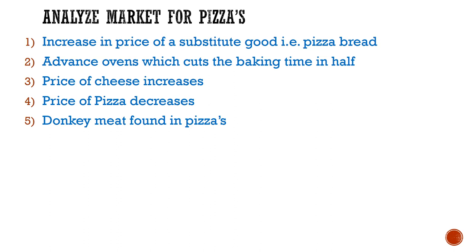Second, there is an advancement in technology — there are advanced ovens which cut the baking time in half, so you can produce more pizzas in less time. Third, the price of cheese increases. Fourth, the price of pizza decreases — how will this affect the market for pizzas? And finally, donkey meat was found in pizzas at multiple franchises — how will this affect the market for pizzas?